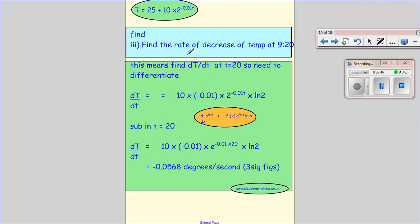The last bit. The rate of decrease of temperature at 9:20. So we're trying to see how the temperature is decreasing with time. So how the temperature changes with time. So we're trying to find dT by dt. So we're going to differentiate this using the same rule that we used before. So differential of a to the f of x equals f dash of x, a to the f of x.